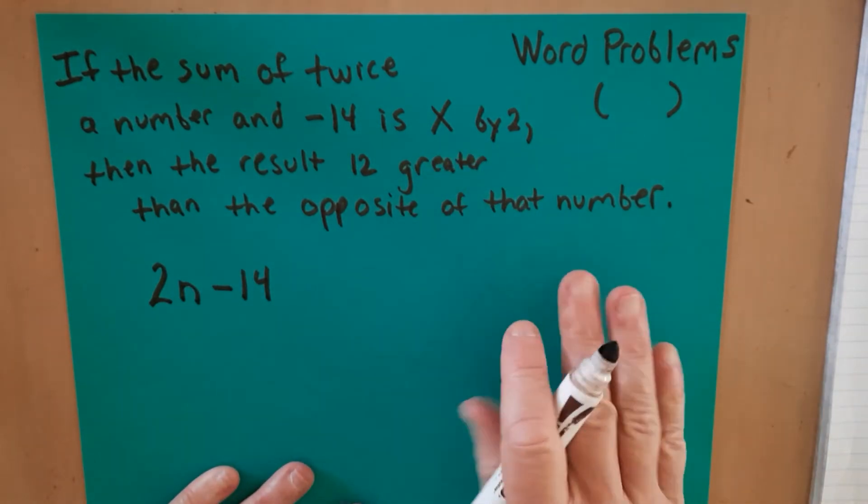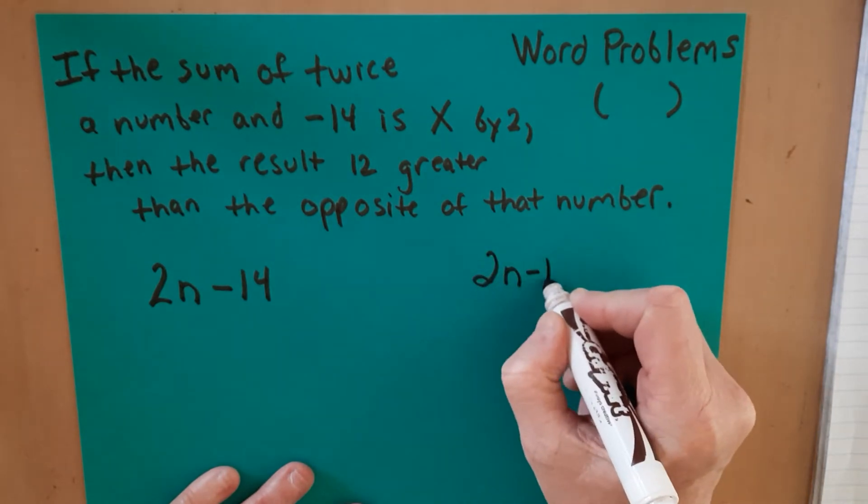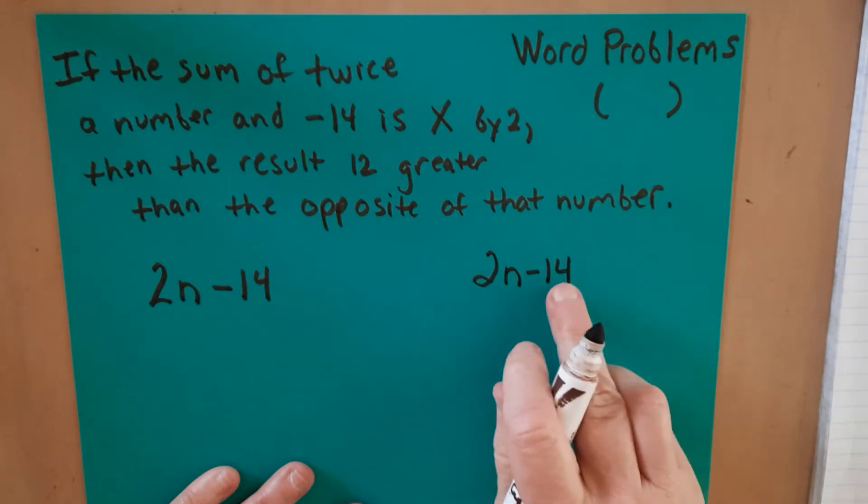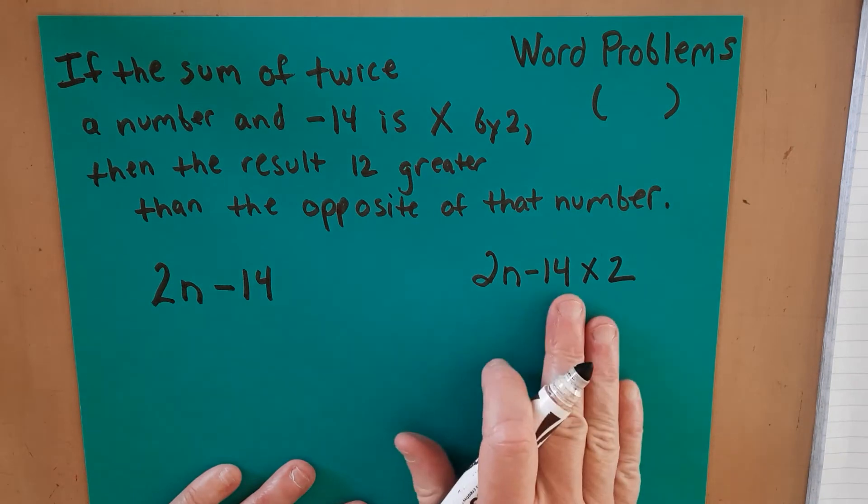You cannot, I'm going to write the wrong way over here. If you have the sum of twice a number and negative 14, and you want to multiply this by 2, you cannot simply write it like that. Because here's what happens.